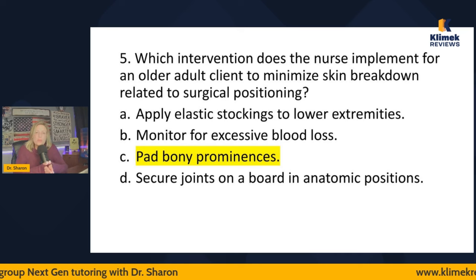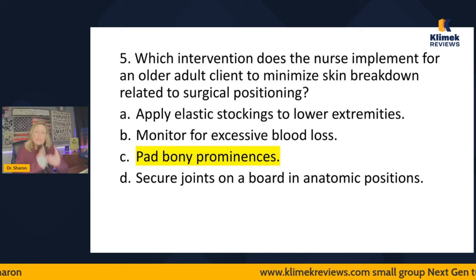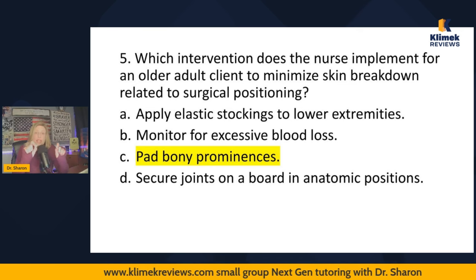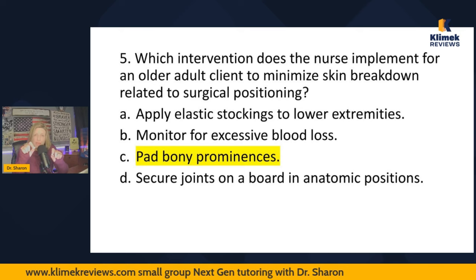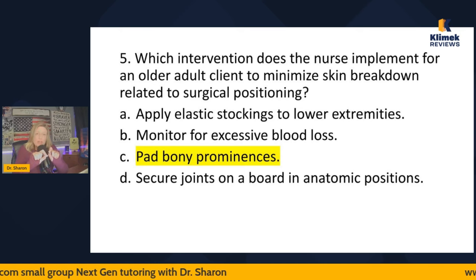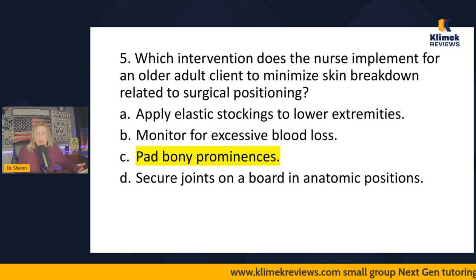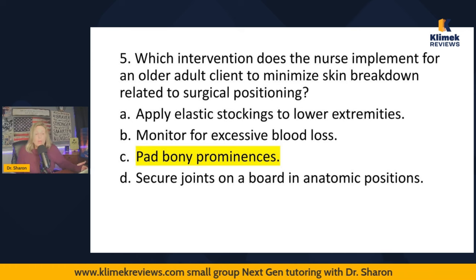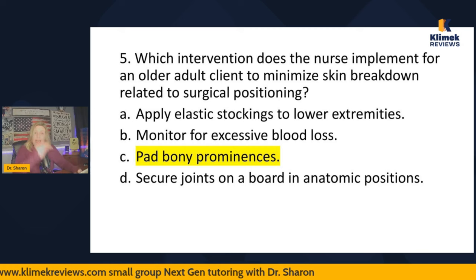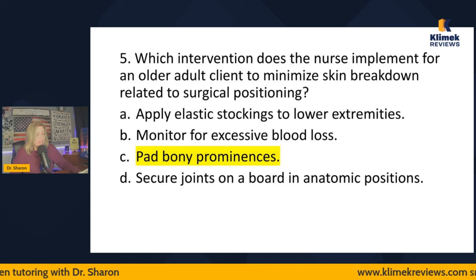A lot of people say they can get it down to two but can't figure out the right answer. The reason is you're not relating it back to the question and you're overthinking. When all four answers seem like good things to do in the OR, relate every one of them back to the key words in the question — skin breakdown — and it makes the right answer really obvious.